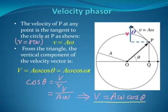Now let's look at velocity phasor. The velocity of P at any point is the tangent to the circle at P, as shown. Here is the velocity phasor tangent to a circle. And the velocity is given by this formula here. A is the radius.